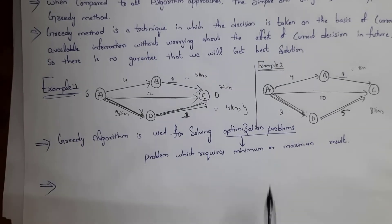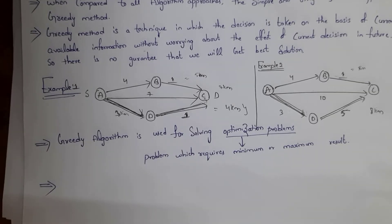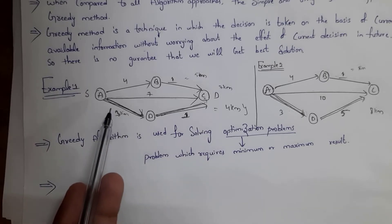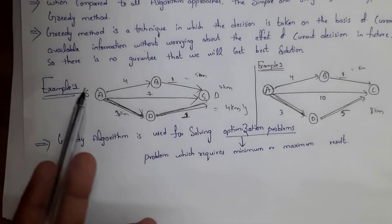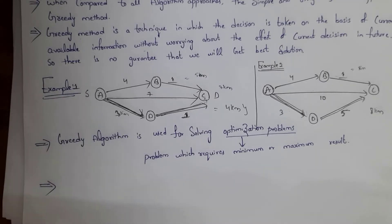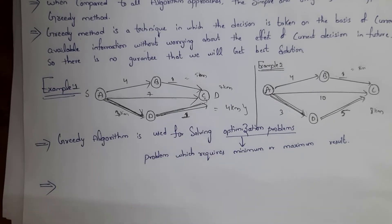Greedy method is used for solving optimization problems. An optimization problem is one that requires a minimum or maximum result — for example, finding the shortest distance, which is a minimum result. In order to solve optimization problems, we use greedy method.